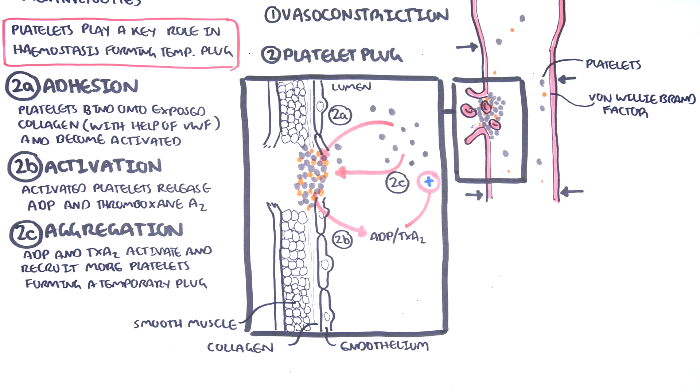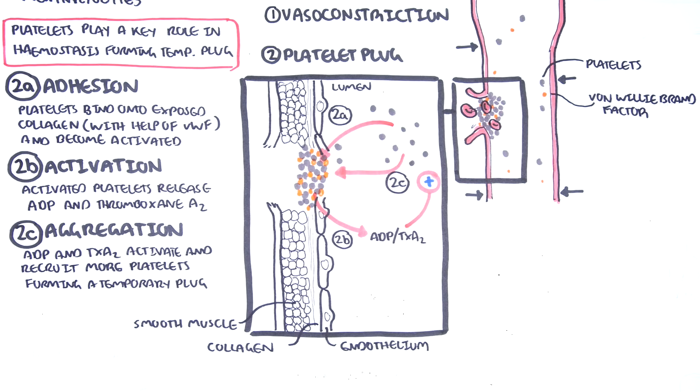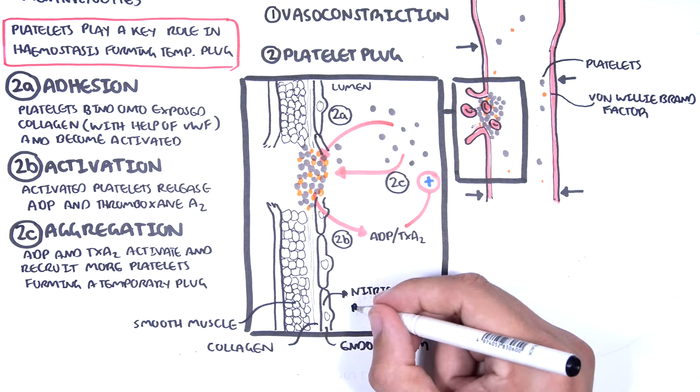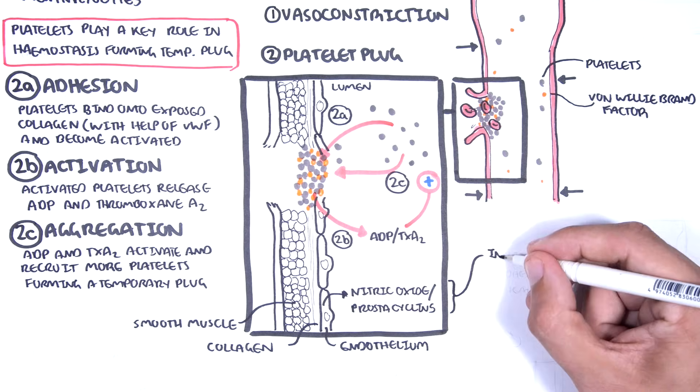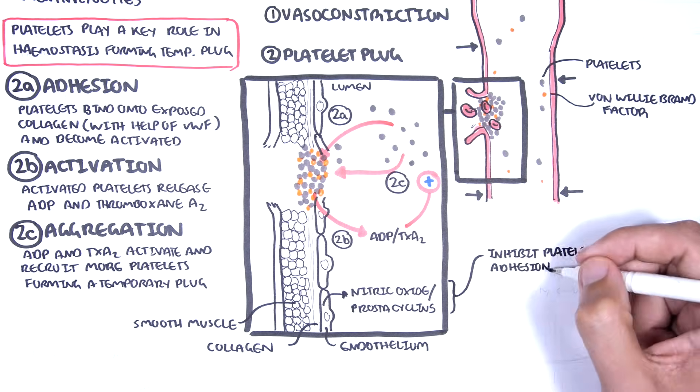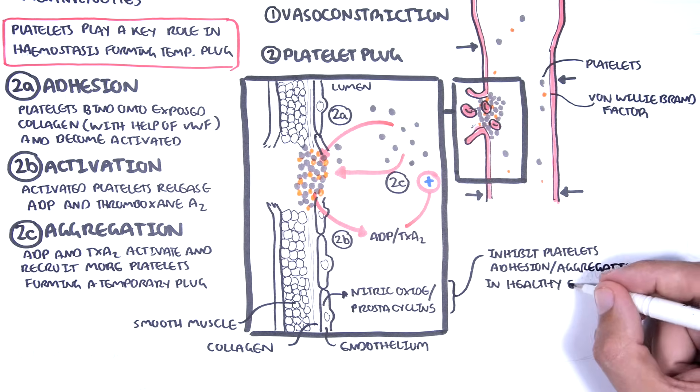Platelets do not adhere or aggregate to the healthy endothelium because the healthy endothelial tissues release nitric oxide and prostacyclins. These chemicals prevent platelets from aggregating onto these healthy cells.